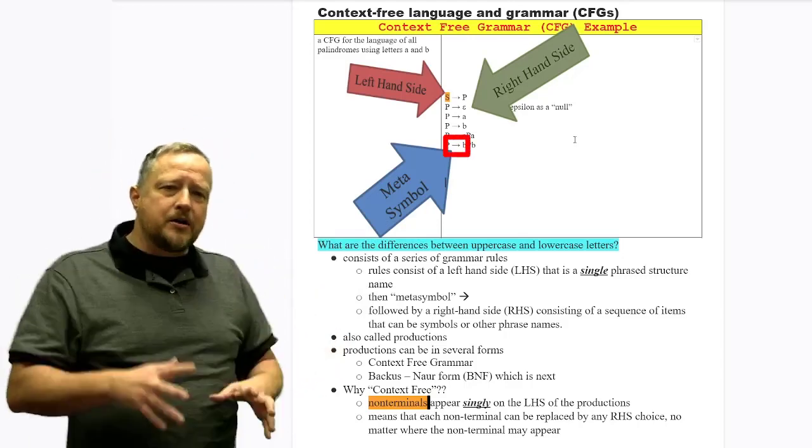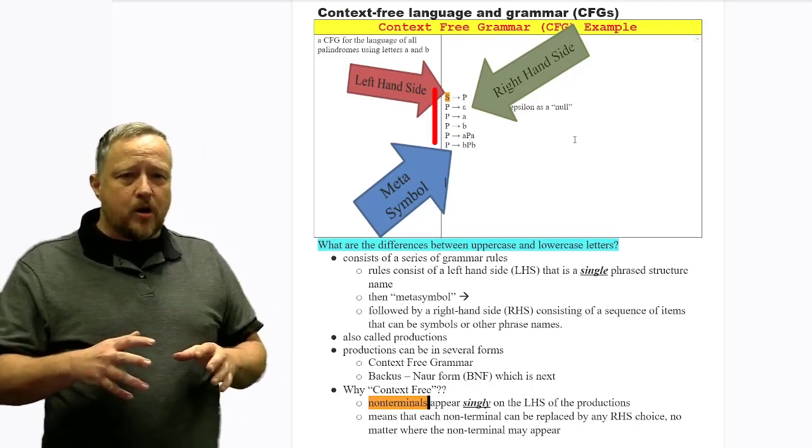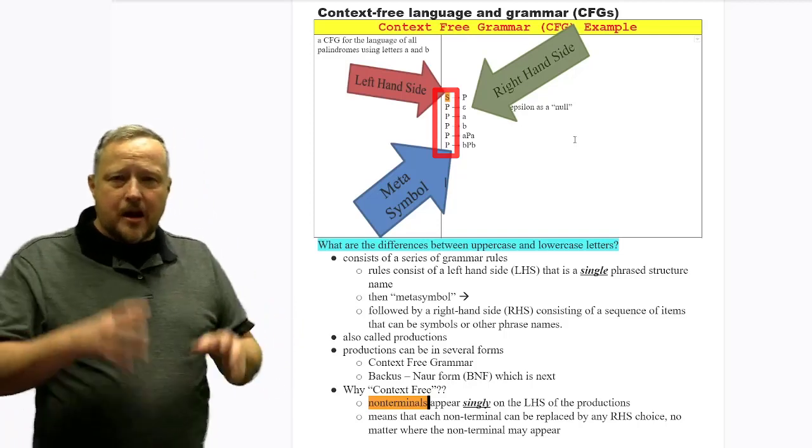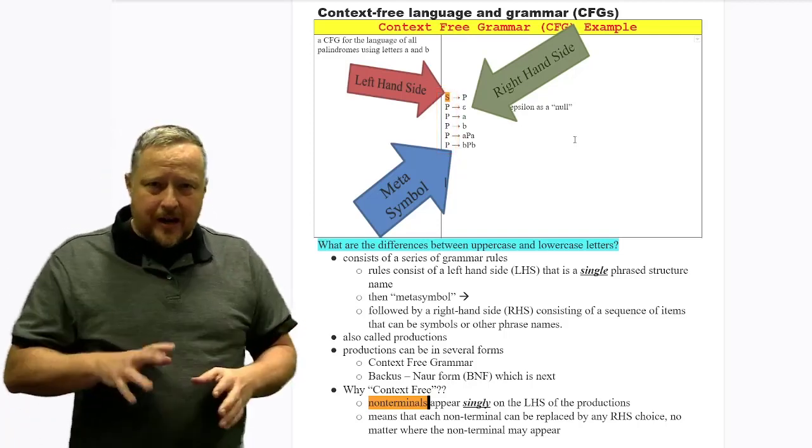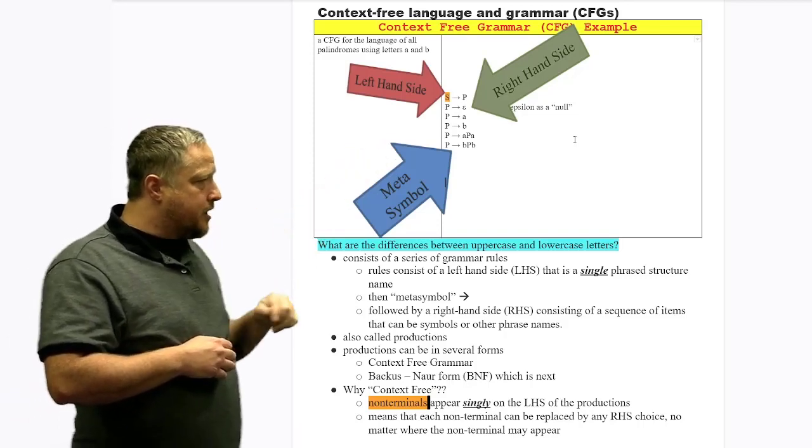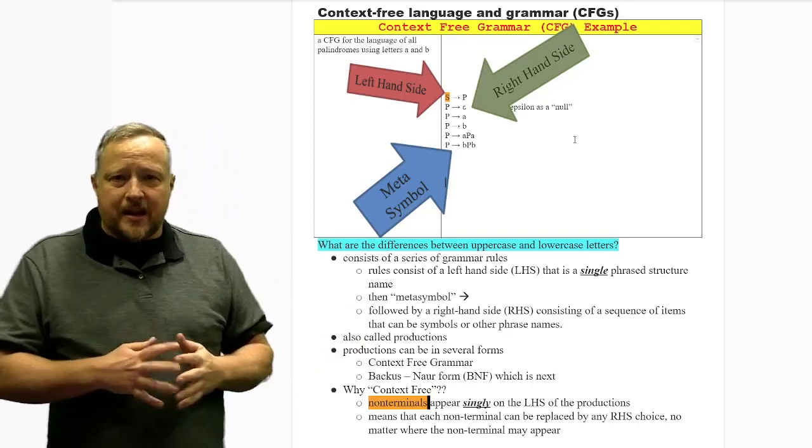So in a context-free grammar, and by the way, there's other grammars that are out there. But in a context-free one, the left-hand side has non-terminal values in it. So you'll notice there's a difference between the uppercase letters and the lowercase letters. The lowercase letters are terminal. They can't reduce into anything else.